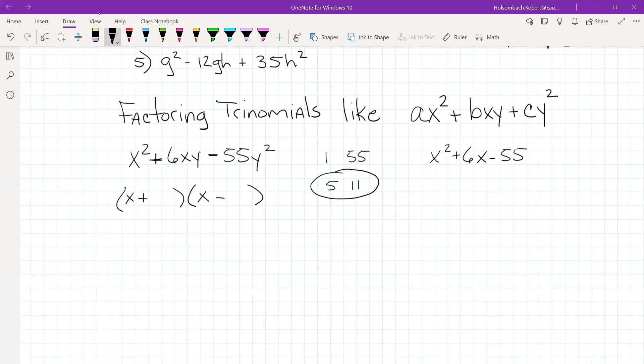But look, since there's a y attached to the second and third term, we're just going to attach a y to the factors. So x plus 11y times x minus 5y will give us x squared plus 6xy minus 55y squared.